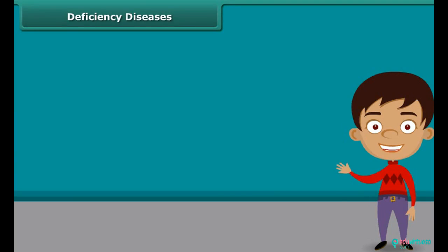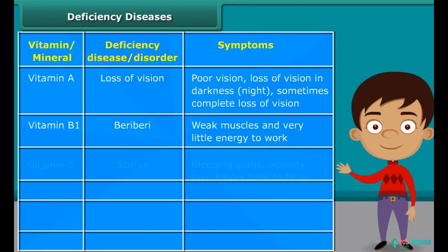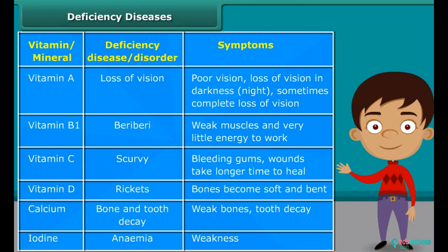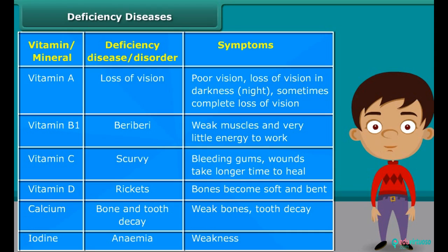After knowing about balanced diet, we should also know that if we don't take a proper diet, what will be the problems? Deficiency diseases are the diseases that occur due to lack of nutrients over a long period. Here is a list of some of the deficiency diseases and their symptoms.